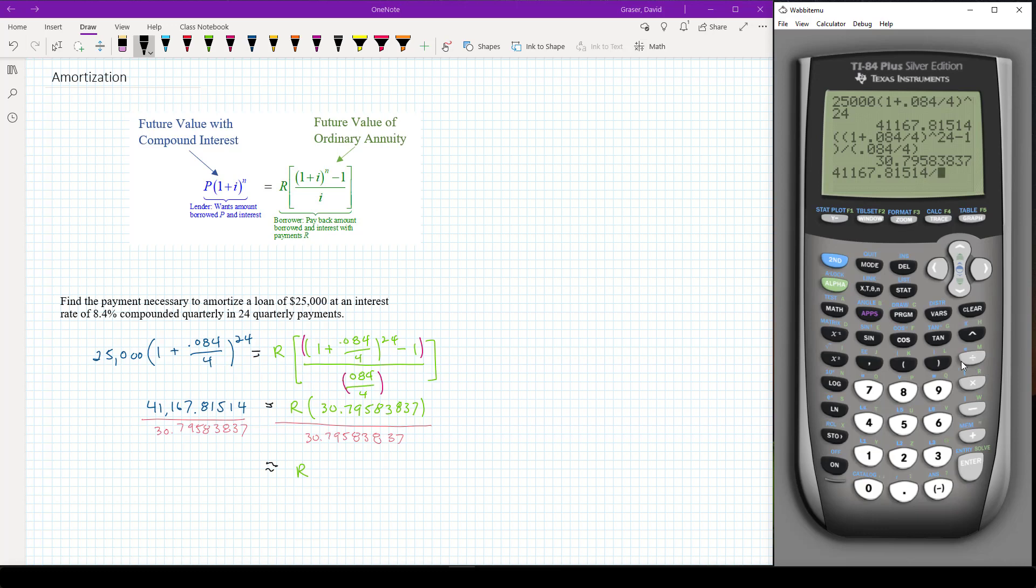And I'm going to divide that by second answer that way I don't have to type in that thirty with all the decimal points. Press enter and I get a payment here.